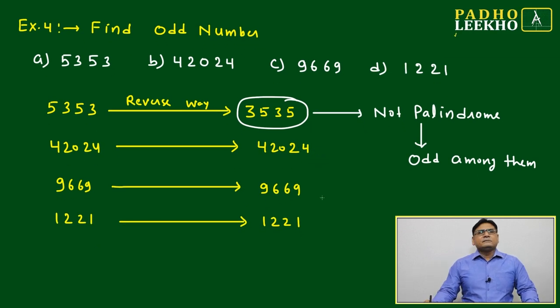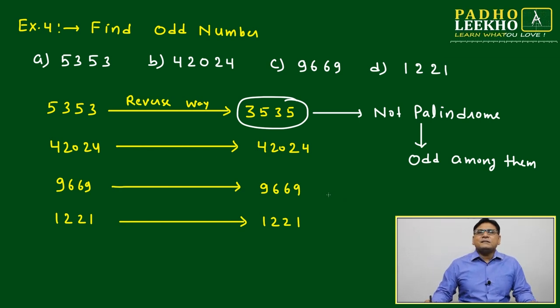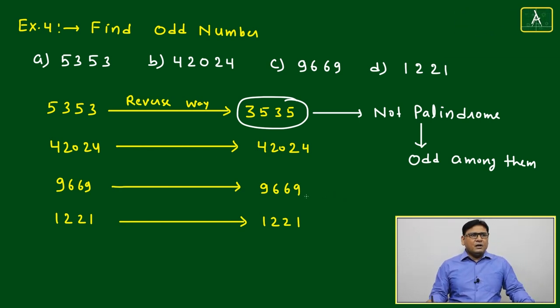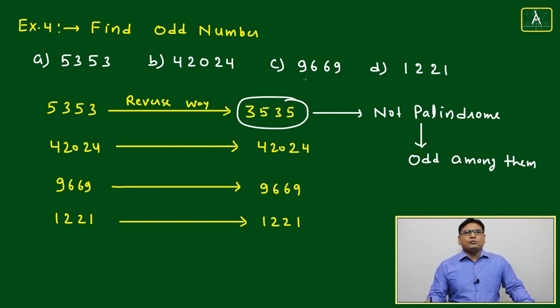We'll go for one more example that will give you more confidence on how to deal with numbers and classification of numbers, and based on that, odd man out. Here again, four choices are given: 5353, 42024, 9669, and 1221.